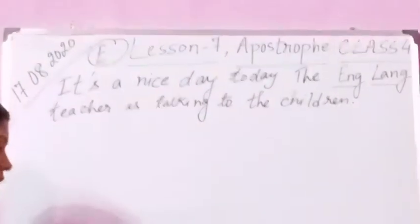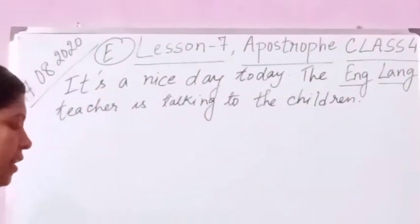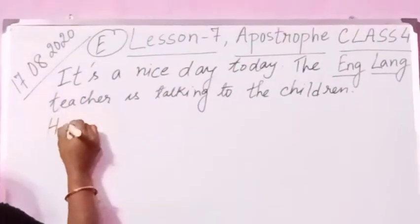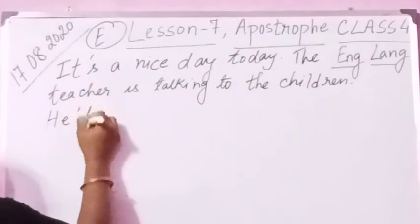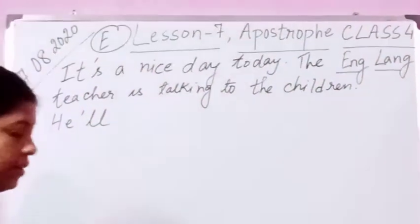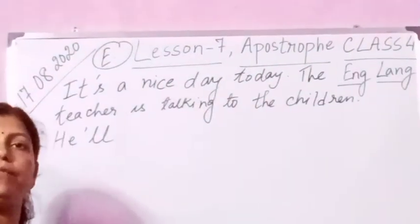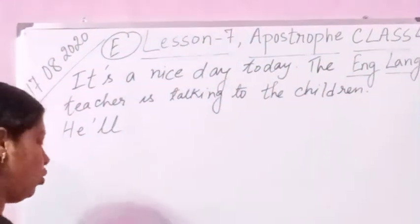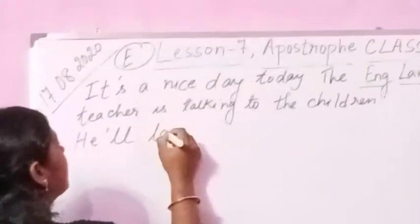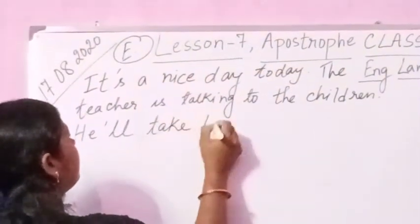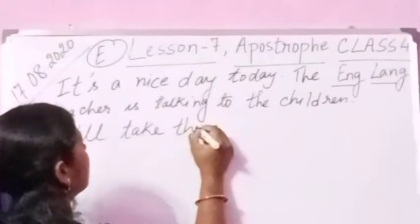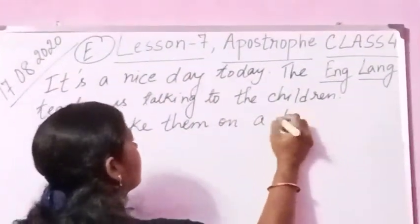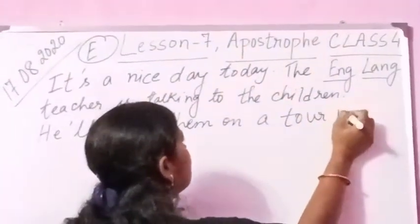Next line: he will take them on a tour next week. The contracted form of 'he will' is he'll — H-E apostrophe double L. So we write: he'll take them on a tour next week.